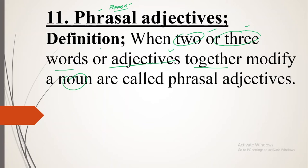So phrasal adjectives means it is a phrase — a group of words. An adjective is normally one word which adds something to the meaning of a noun, but a phrasal adjective is a group of words that together modify a noun. Students commit a lot of mistakes making sentences with phrasal adjectives.